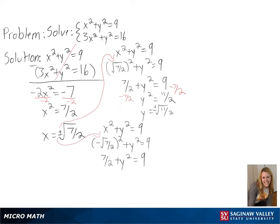We can also see when x is a negative square root of 7 over 2 we get the same answer as a positive or negative square root of 11 over 2. So we have found our intersections.